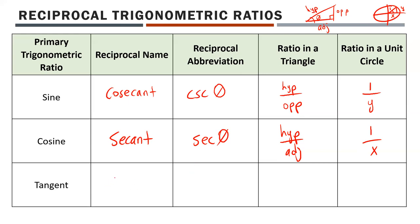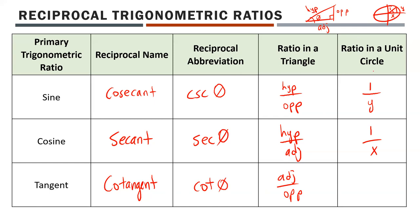The reciprocal of tangent is called cotangent, abbreviated COT. Tangent is opposite over adjacent, so cotangent is adjacent over opposite. In a unit circle, that's x over y. The pattern holds: everything has a 'co' version — sine and cosine, secant and cosecant, tangent and cotangent.